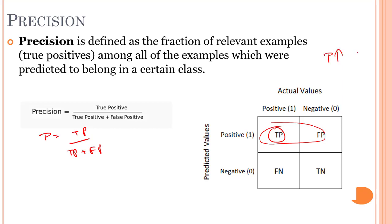There is a trade-off between recall and precision. Whenever you try to increase precision, your recall will decrease, and when you try to increase recall, your precision will decrease. Recall expresses the ability to find all relevant instances in the dataset, whereas precision expresses the proportion of data points the model identified as relevant that actually were relevant.